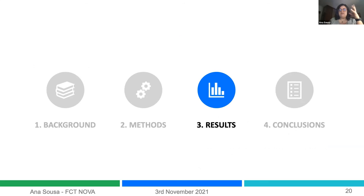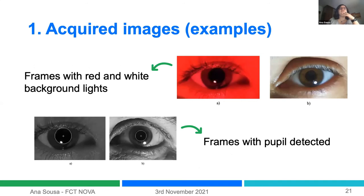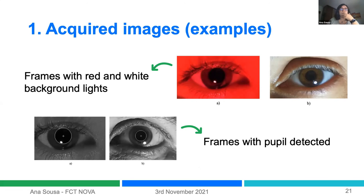First, to show the quality of images we are obtaining — with red and white background lights — we can see a proper contrast between the pupil and the iris, which is exactly what we need to be able to detect the pupil. Here are some examples of the pupil detected through our algorithms.